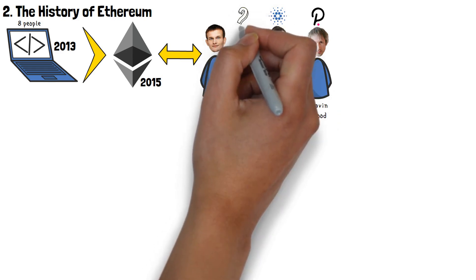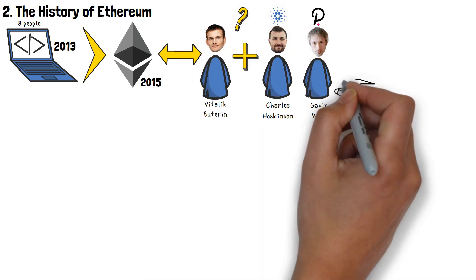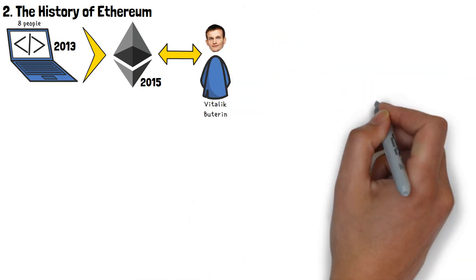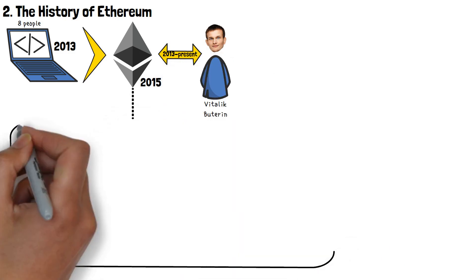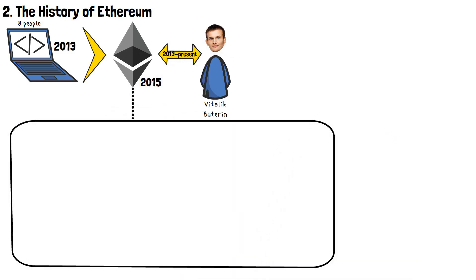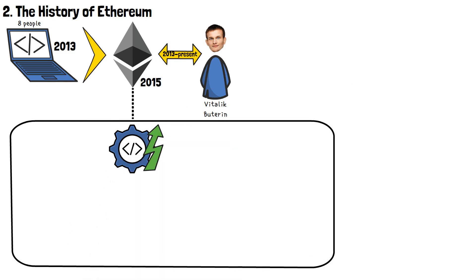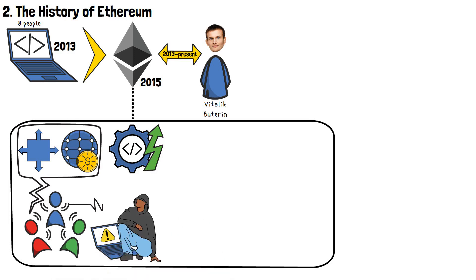Why then is Vitalik the only one who people associate with Ethereum nowadays? Well, it's a whole big story in itself, but long story short, out of those 8 initial founders, Vitalik is currently the only one left working on ETH. Throughout the years, Ethereum had a variety of ups and downs and experienced a lot of different updates. While this blockchain was always a bit controversial, mostly due to its problems with scalability and network fees, the biggest controversy it has experienced to date is likely a hack that happened all the way back in 2016.